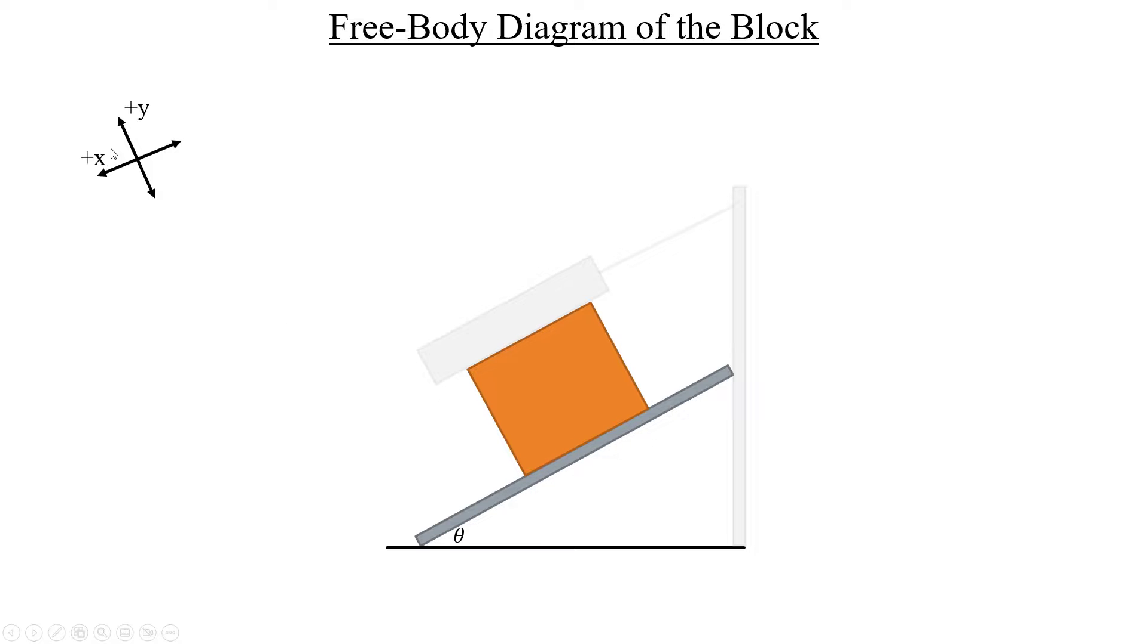The y-direction doesn't change from what we're used to. If you move perpendicular to the inclined plane upwards, that's plus y. Pretty easy to understand. So, if you didn't put your coordinate system on your object and you did it off to the side like me, let's go ahead and put one on here now.